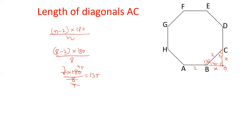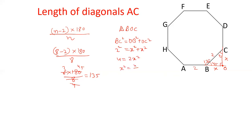Let me take this point as O. In triangle BOC, we can apply the Pythagoras theorem: BC squared equals OB squared plus OC squared. OB is X, OC is also X, and BC is 2. So 4 equals 2X squared, therefore X squared equals 2, and the value of X will be under root 2. So this value is root 2 and this value is also root 2.